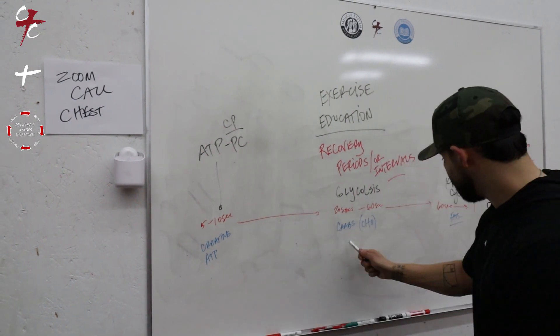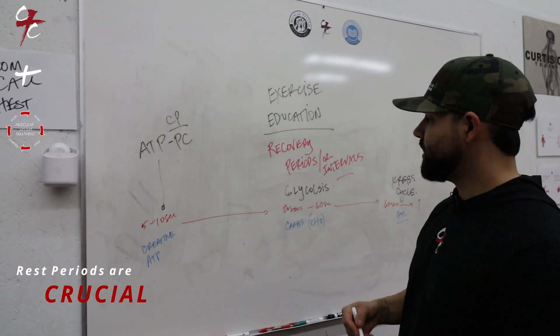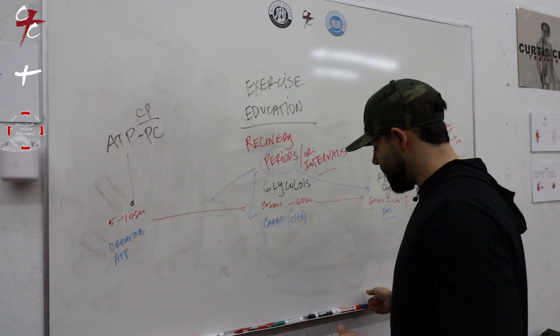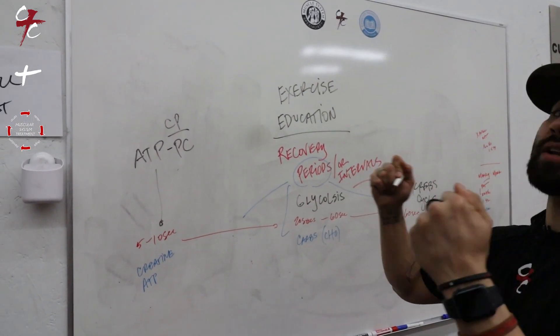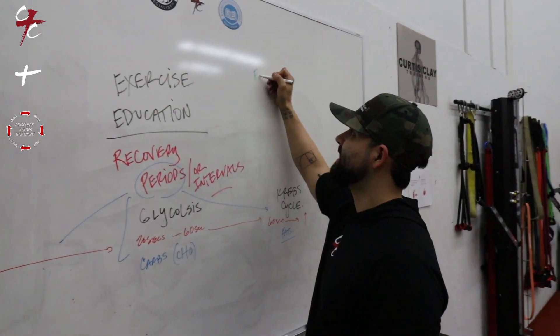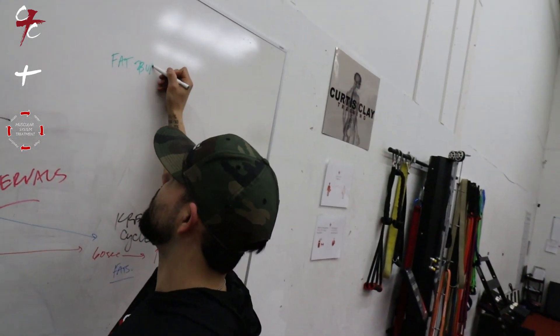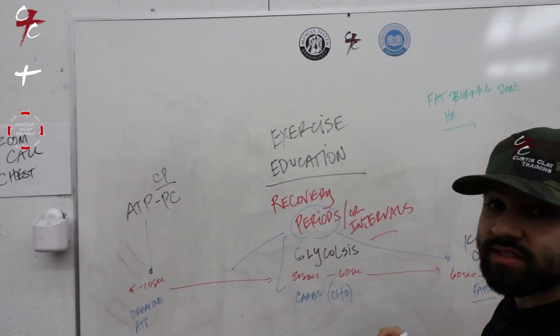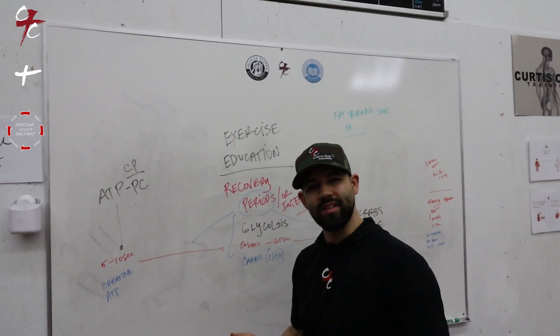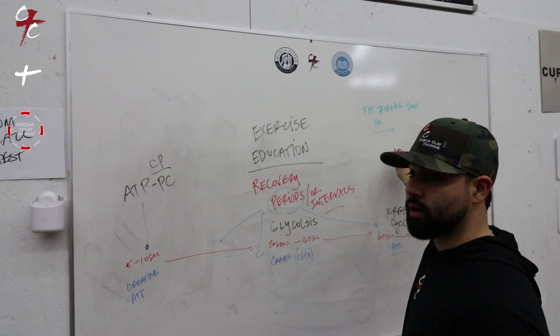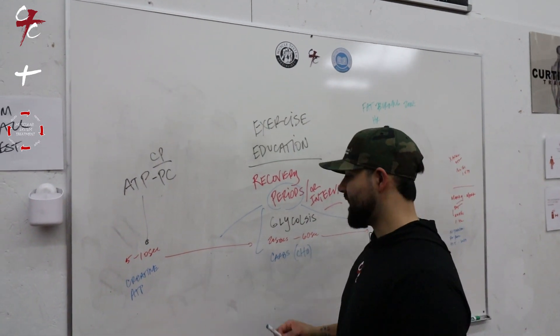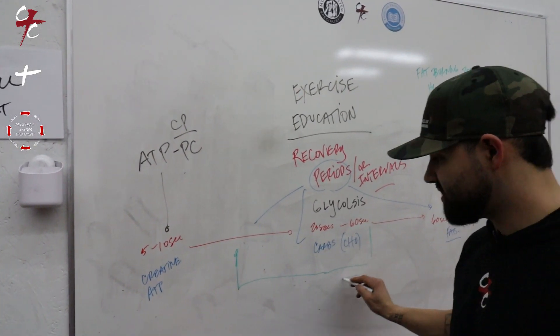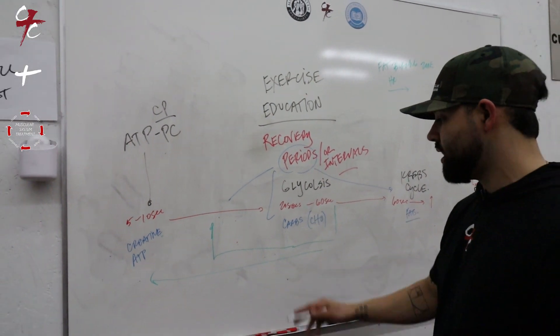We never shut off any of these. The rest periods or intervals that we take are going to dictate which energy system we're going to rely on more. Like the fat burning zone, you see on cardio machines or treadmills the infamous fat burning zone that says you need your heart rate at this level for this amount of time. That's not how science works. If I'm doing sprints, I'm probably going to be burning more creatine and carbs.